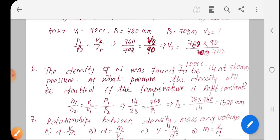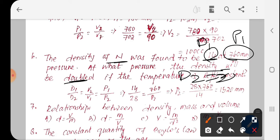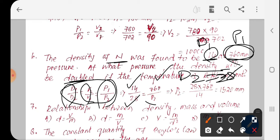Question number six: The density of nitrogen was found to be 14. The density will be doubled, so D1 by D2 equals P1 by P2. D1 by D2 equals P1 by P2. D1 is 14, D2 is double which is 28. So P1 is 630, then P2 is 520. Solving gives 15N.